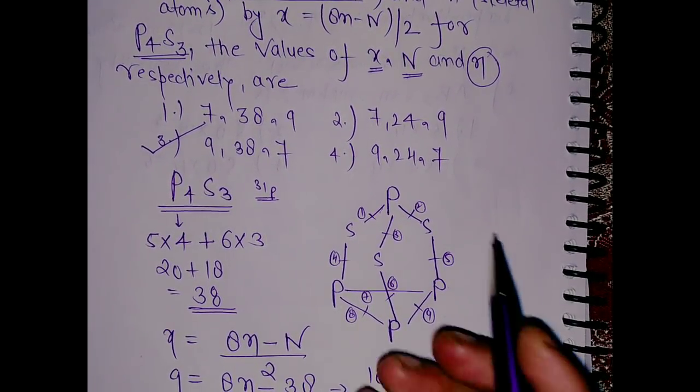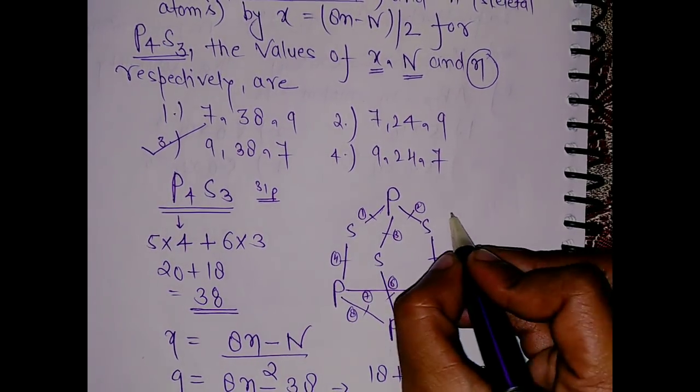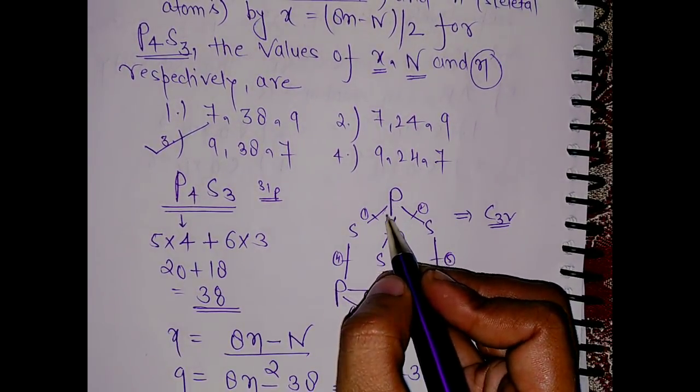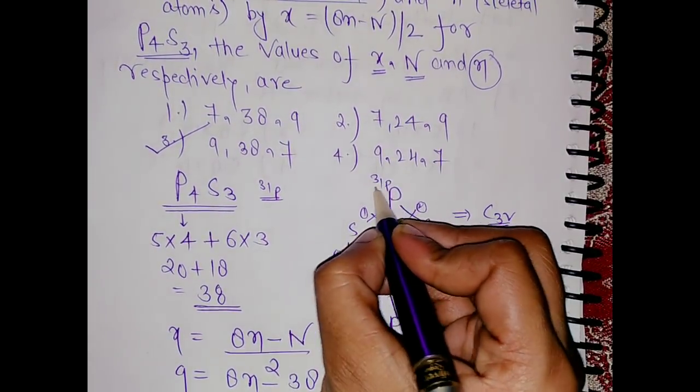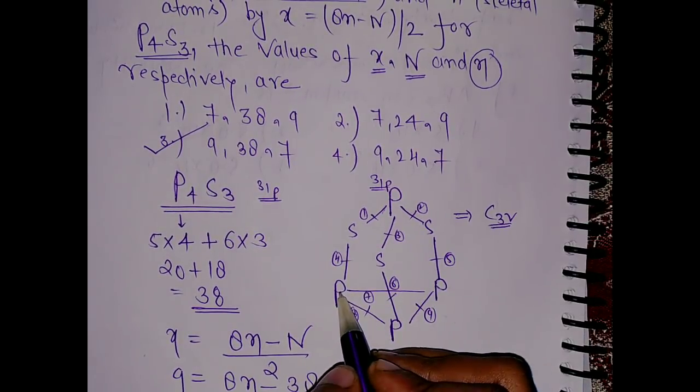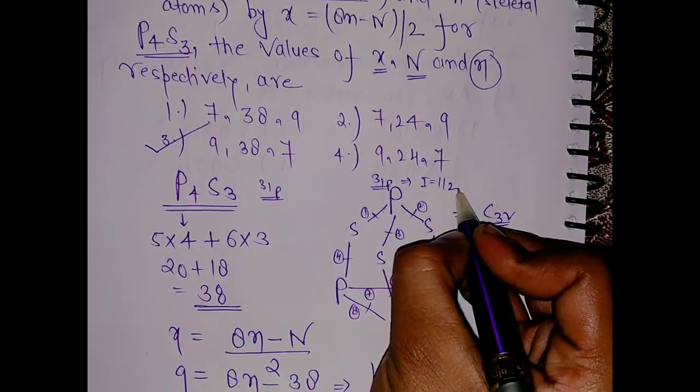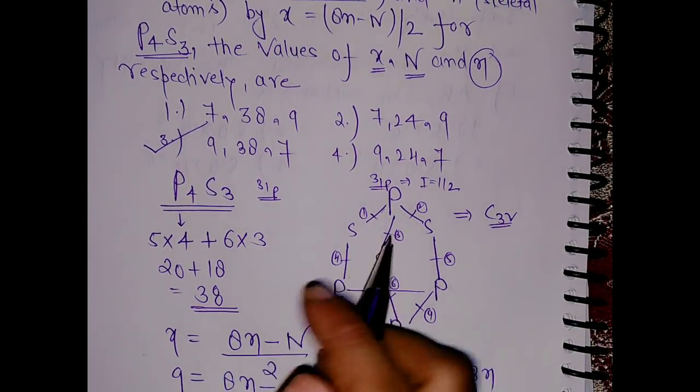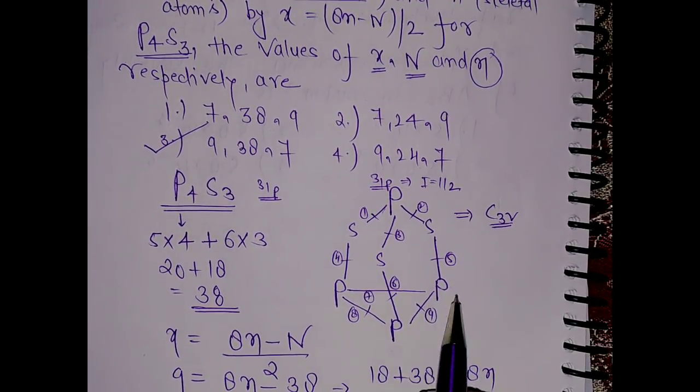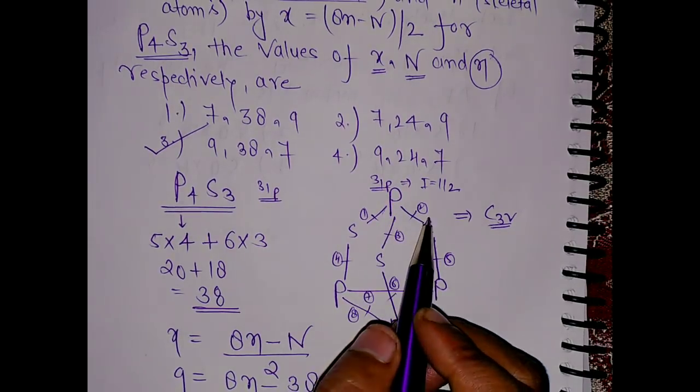As you can see, what will be the point group? The point group will be C3v. One more question is there. This is 31P and this is also 31P. For this we will get one, two, three, so the I value is half, it will become 2, and I plus 1, so 3 are there, so it will get a quadruplet. These three phosphorus are in similar environment, so for them we will get a doublet from this phosphorus.